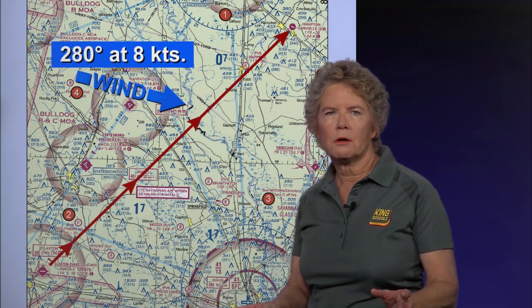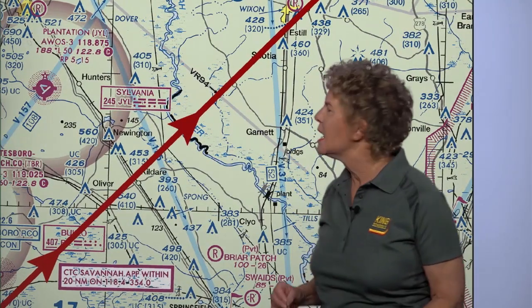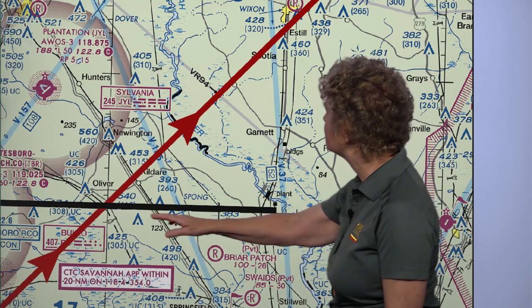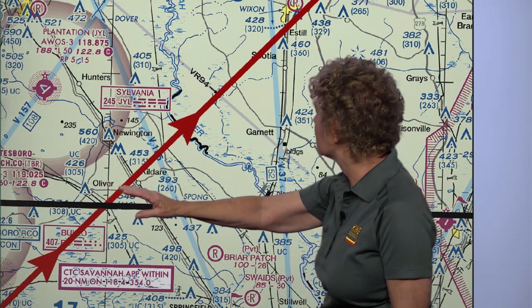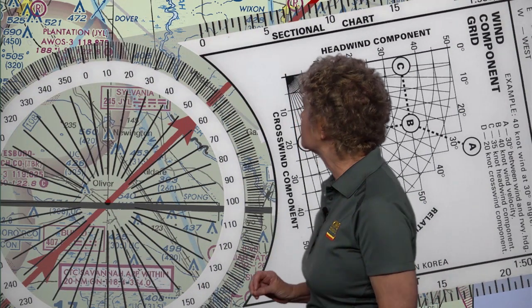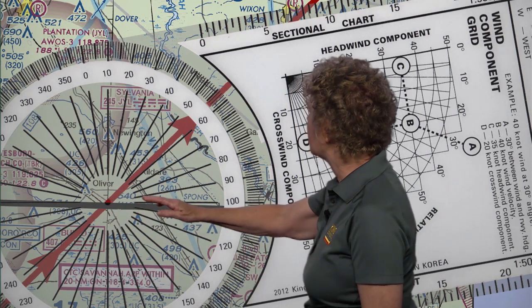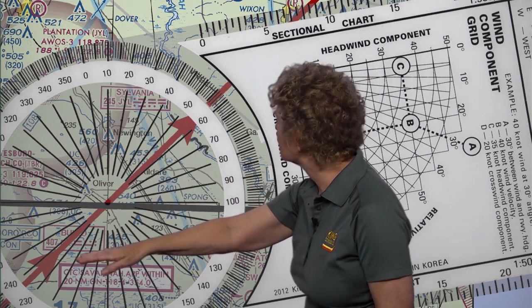Now we need to measure exactly what our true course is on that chart. We need to find a line of either latitude or longitude that goes through our course line. Let's use this line of latitude where it intersects our course line. First, put the grommet in the center of the compass rose of the plotter on the intersection of that line of latitude and our course line.